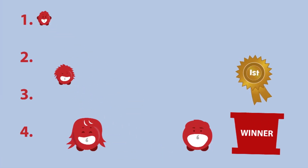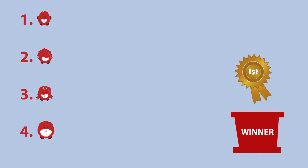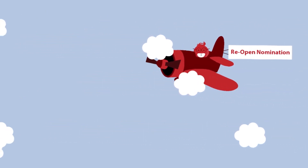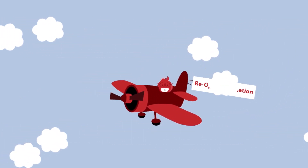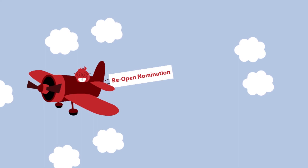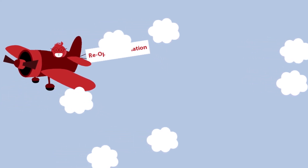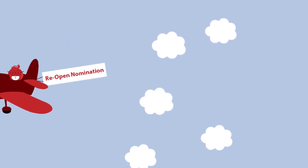It's your job to rank them in order of preference. There's also this little guy called Ron, or reopen nominations, who you can vote for if you don't think any of the candidates are suitable.